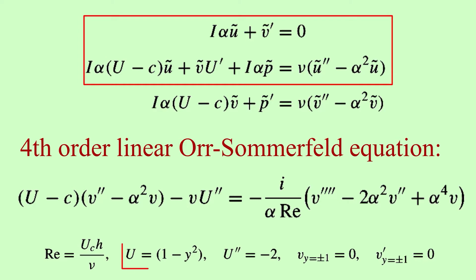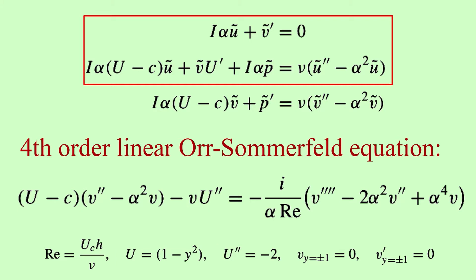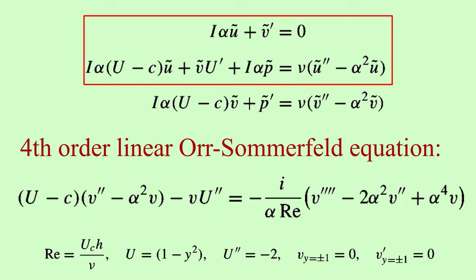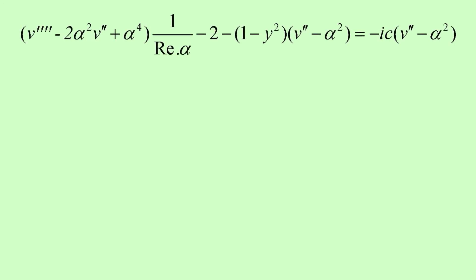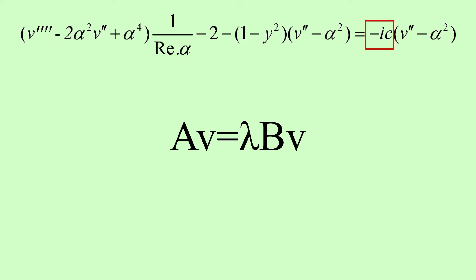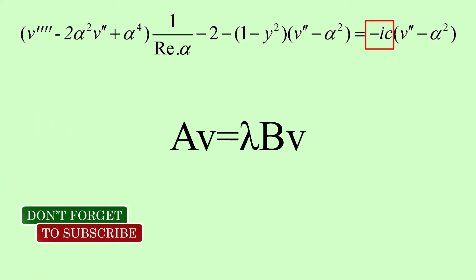We know this is U and this is the second derivative of U for Poiseuille flow, and these are the boundary conditions. Rewriting the Orr-Sommerfeld equation shows that since Reynolds number and alpha are known, this is an eigenvalue problem. I take this coefficient to be lambda and our aim is to find this complex eigenvalue.